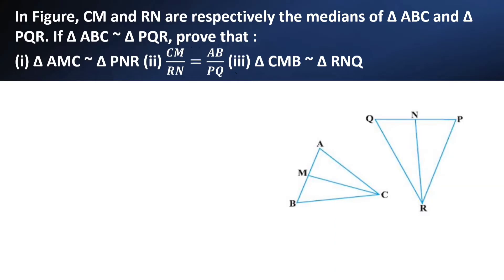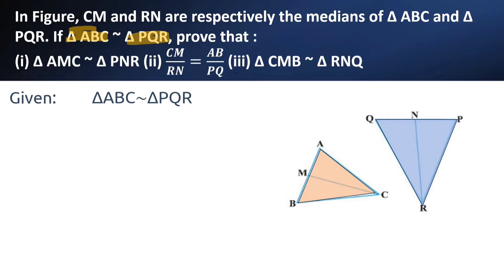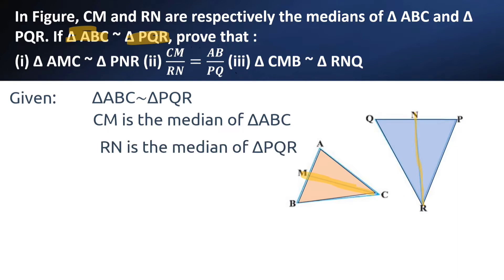What has been given in the question? In the figure, two triangles are there — triangle ABC and triangle PQR. It is given that triangle ABC is similar to triangle PQR, and CM is the median of triangle ABC, and RN is the median of triangle PQR.